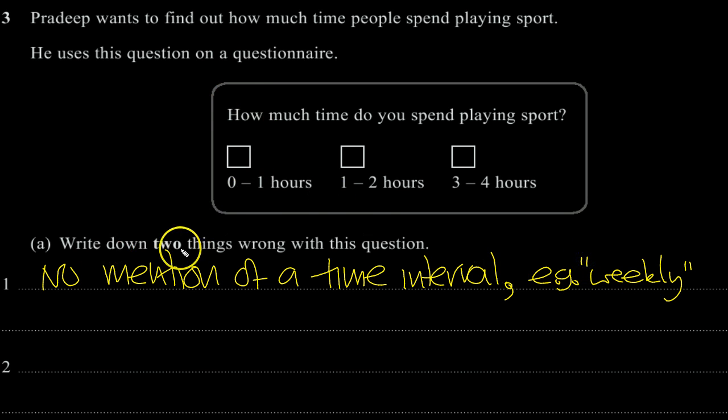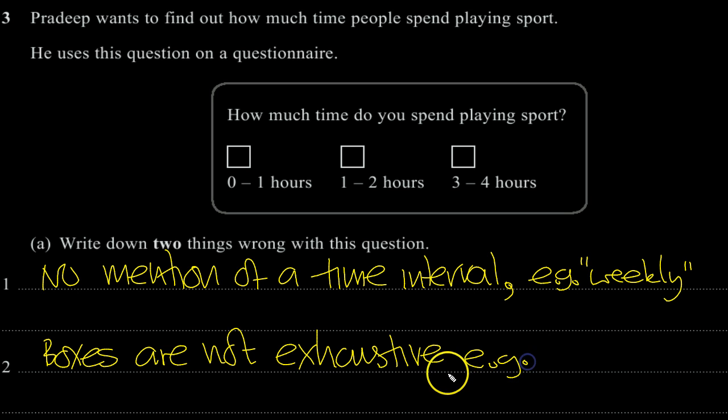And then what else is wrong? Two things. Well, these things aren't overlapping, aren't they, these options? But also they're not exhaustive. So boxes are not exhaustive because they only go up to four. So to make it exhaustive, we would put in, for example, more than four.